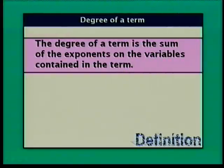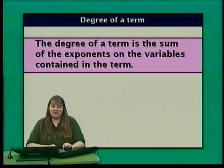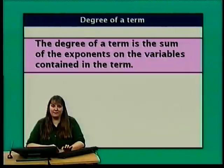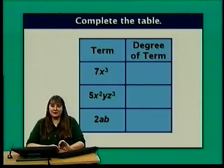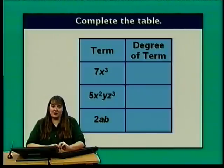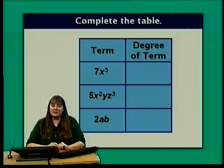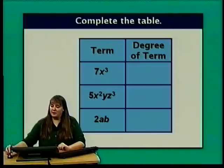The degree of a term is the sum of the exponents on the variables contained in the term. For example, 7x cubed has a degree of 3 — we just look at the exponent 3 on our variable x.